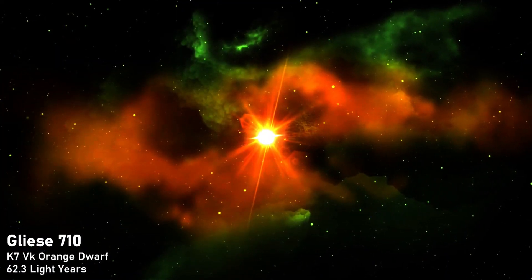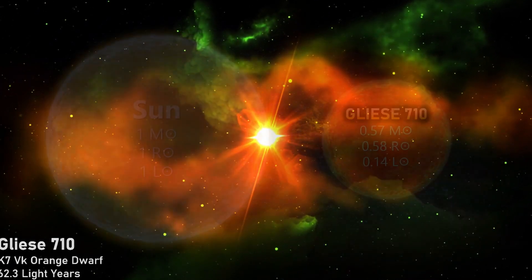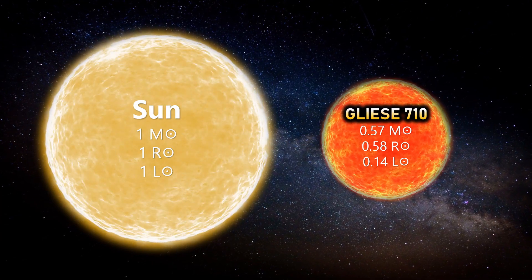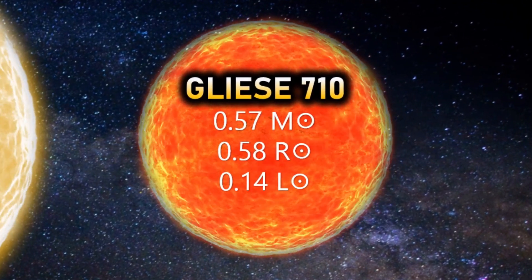Of course, the implications of Gliese 710's passage through the Oort cloud are pretty profound for our system. The star, while small compared to our Sun, is still a relatively large star, and certainly no red or brown dwarf.